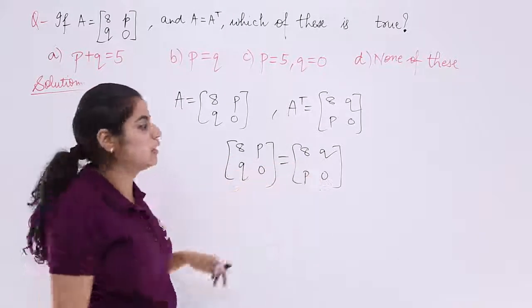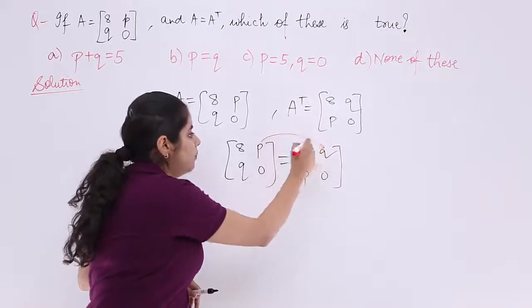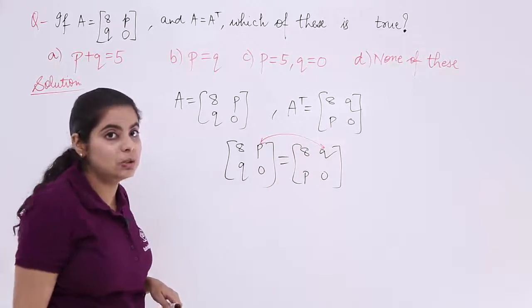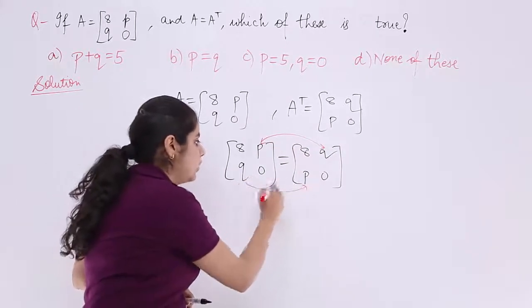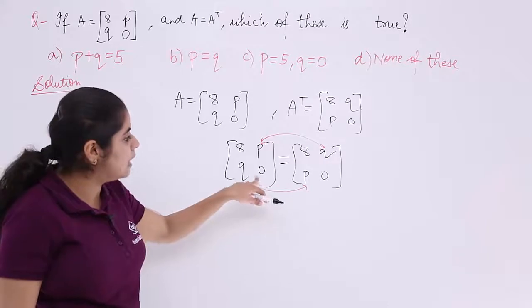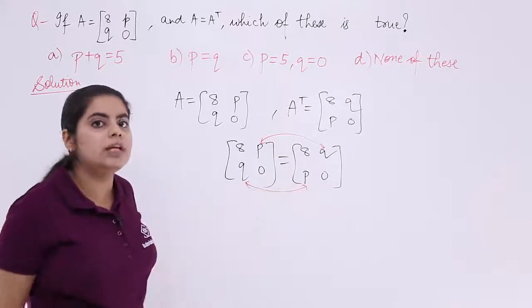8 is equal to 8, we already know. From here, P and Q must be equal. From here again, Q is equal to P, that means P and Q must be equal and 0 and 0 are already equal.